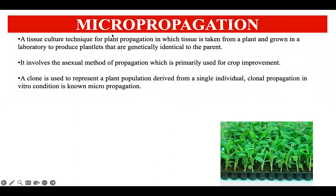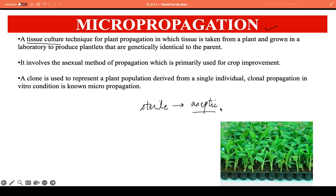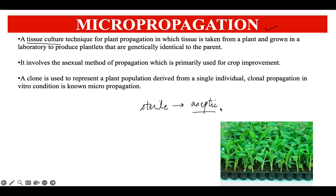Micropropagation is a technique which is also known as plant tissue culture, and this is a method to propagate plants under sterile conditions. Sterile conditions means aseptic conditions — that is, the absence of microorganisms. This technique has to take place under aseptic conditions, because even a slight bit of contamination or presence of microorganisms can lead to the failure of this technique.